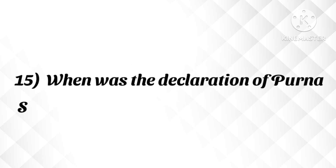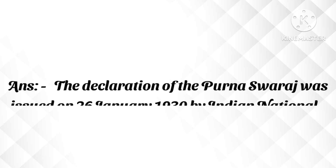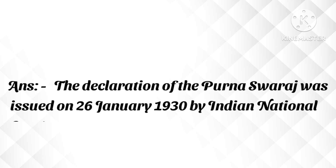Question: When was the Declaration of Poorna Swaraj released? Answer: The Declaration of Poorna Swaraj was issued on 26 January 1930 by the Indian National Congress.